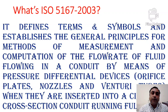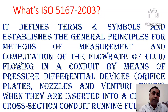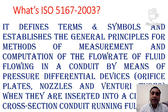Next is ISO 5167. It defines terms and symbols and establishes the general principles for methods of measurement and computation of the flow rate of fluid flowing in a conduit by means of pressure differential devices — such as orifice plates, nozzles and venturi tubes — when they are inserted into a circular cross section conduit running full.